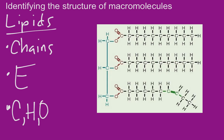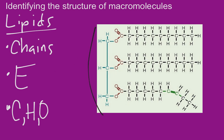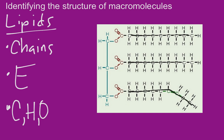Here we have that classic E-shape of a triglyceride. This molecule is made up of a glycerol backbone and three fatty acid tails — one of them happens to be unsaturated and the others saturated. So if you see this E-shaped molecule with fatty acid chains on it, you know that's a triglyceride, and a triglyceride is a lipid.